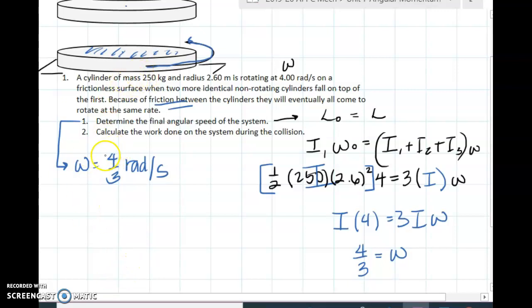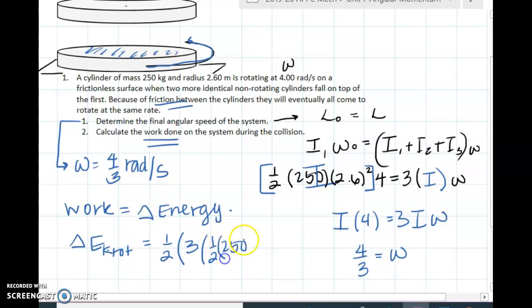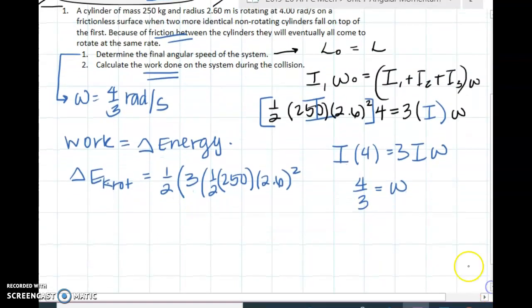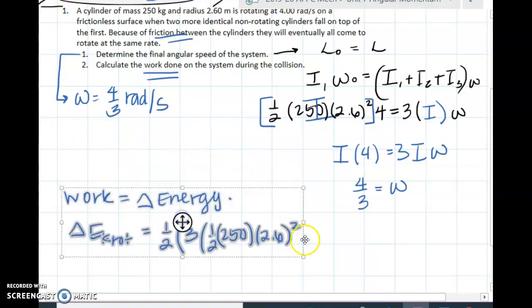Alright then, calculate the work done. And remember, work can be energy, change in energy. So then the work would be the change in energy. The change of energy would be the rotational variety, so one half. And this is where you're going to have to actually use the sizes.